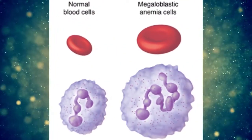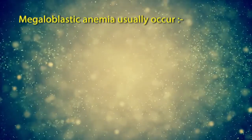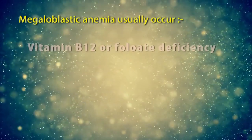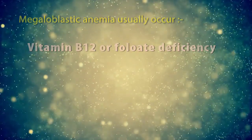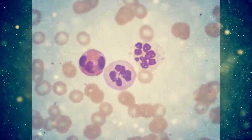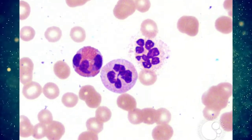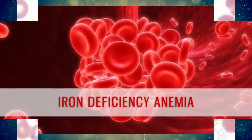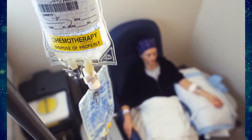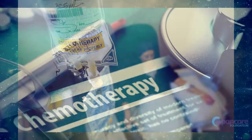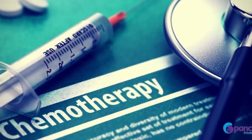Megaloblastic anemia usually occurs because of vitamin B12 or folate deficiency. Also, neutrophil hyper-segmentation is strongly associated with iron deficiency anemia, and individuals who are receiving chemotherapy or have long-term chronic infections.